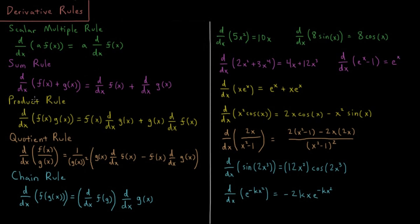Now getting a little trickier: the product rule. The derivative of the product of two functions f times g is f(x) times the derivative of g(x) plus g(x) times the derivative of f(x). So it's the first times the derivative of the second, plus the second times the derivative of the first.